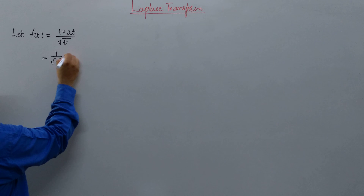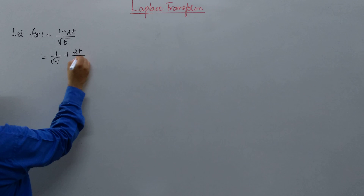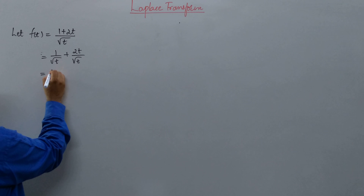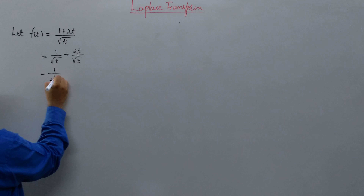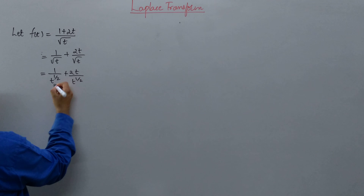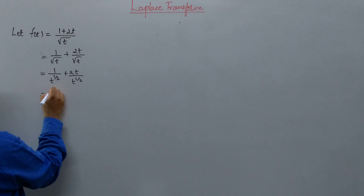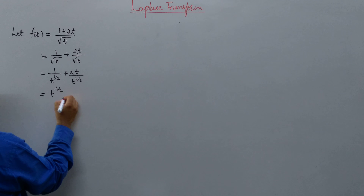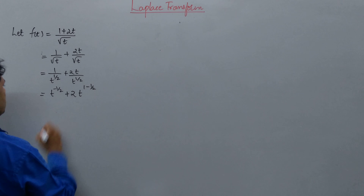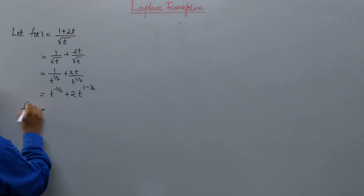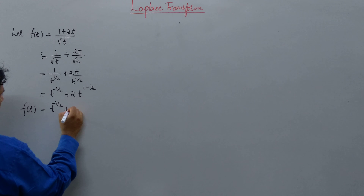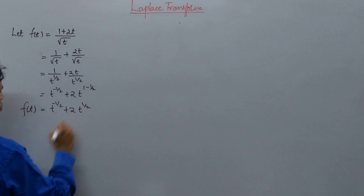We will have 1/√t + √t/√t. We know √t is t to the power of half. So this is 1/t^(1/2) + √t/t^(1/2), which gives t^(-1/2) in the numerator plus 2t^(1 - 1/2). So we get f(t) = t^(-1/2) + 2t^(1/2).